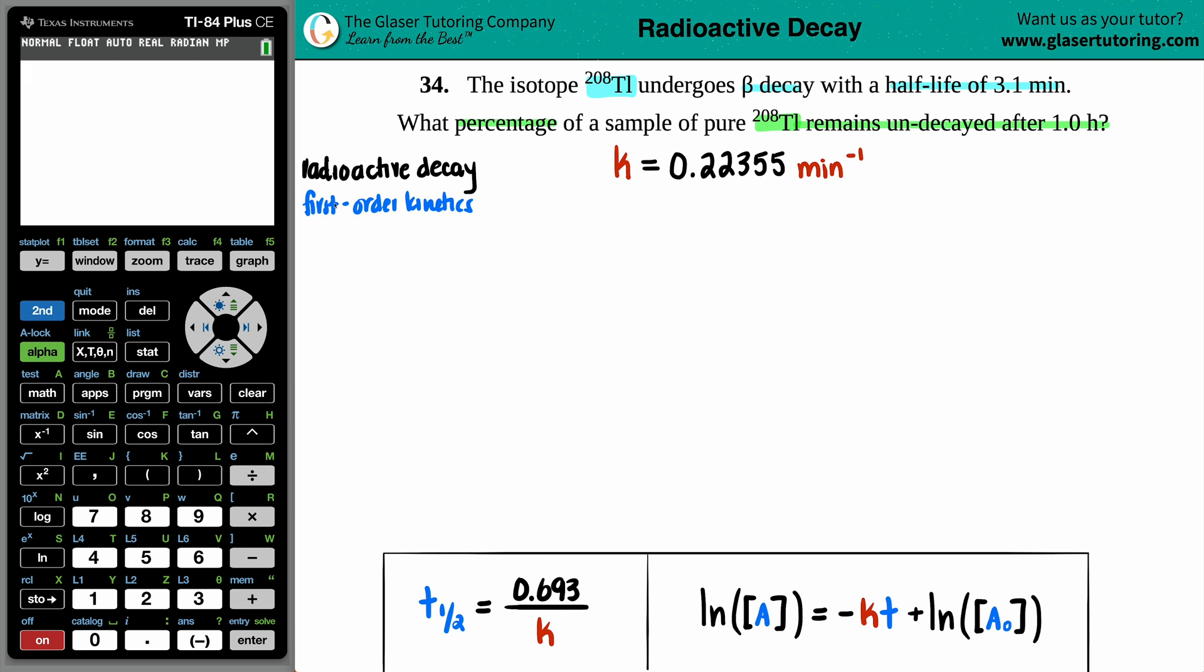You don't need to memorize different formulas just because it's a different chapter. So what we're going to do is we're going to take those first-order kinetic equations that we already learned from that chapter and just use them here because there's no exception. It's always going to undergo first-order kinetics. Now, in this, I am adding the rate constant here, which is the K value. If you want to know where this value came from, you could always check out 34B in the playlist where I did the actual math to find this out.